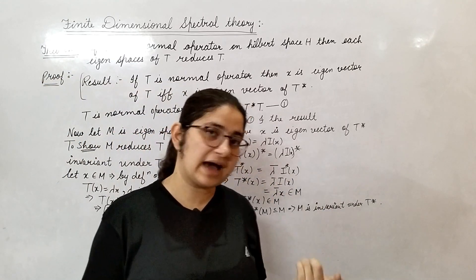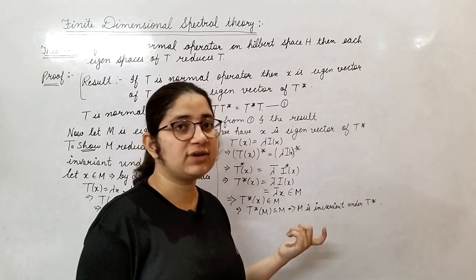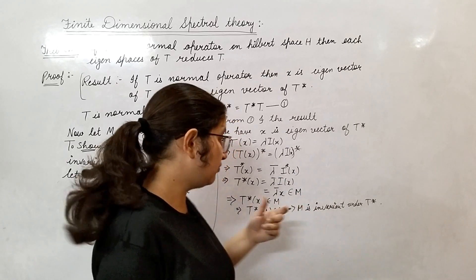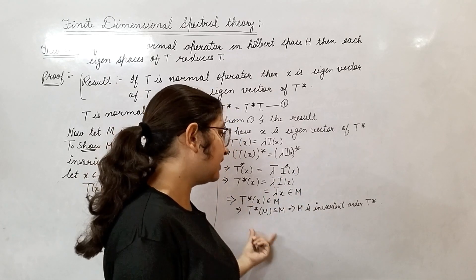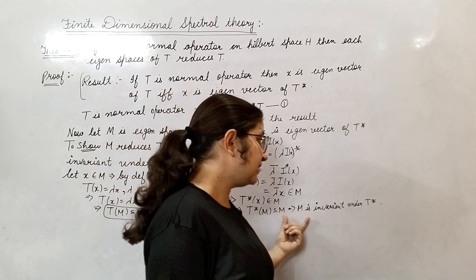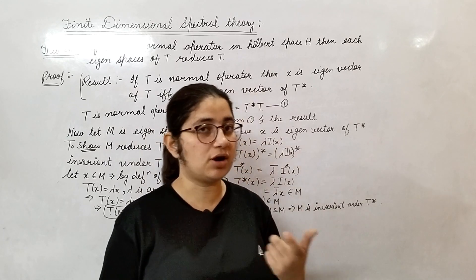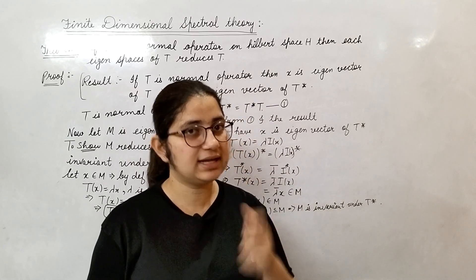But M was an arbitrary eigenspace. So whatever eigenspace you choose, you will find that that eigenspace always reduces the operator T. This completes the proof that each eigenspace of a normal operator T reduces T.